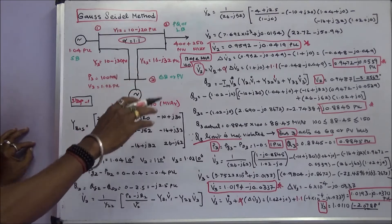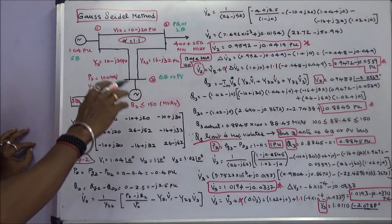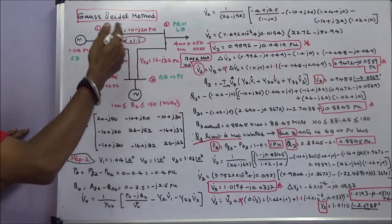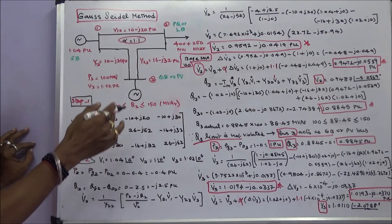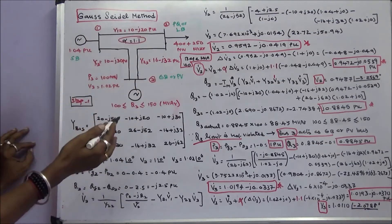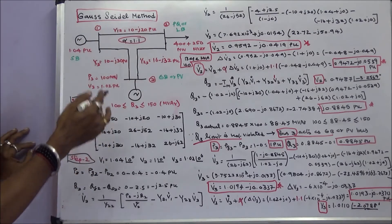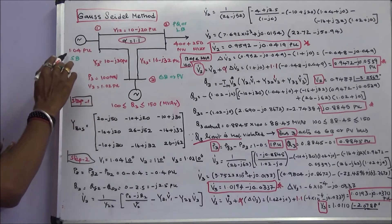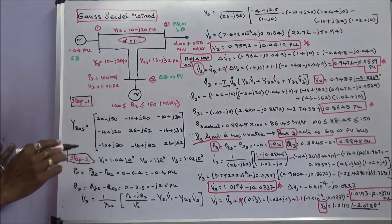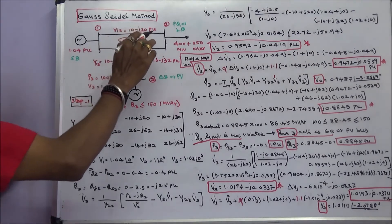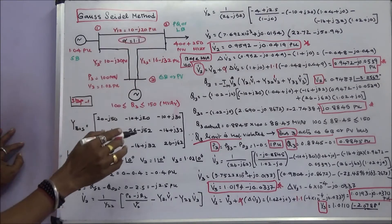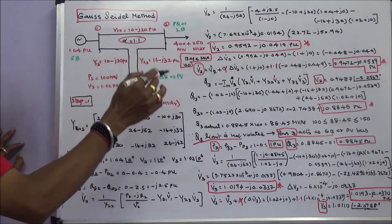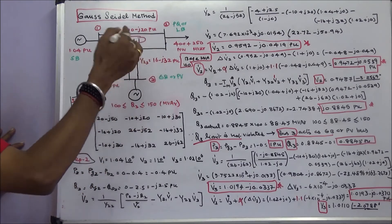This last problem uses the Gauss-Seidel method. This is the given power system network, which consists of three buses. Bus 1 is a slack bus with voltage 1.04 per unit. Bus 2 is a load bus because P and Q values are given — it is a PQ bus.